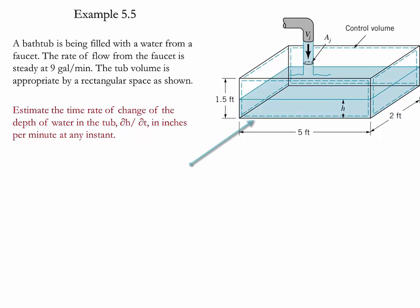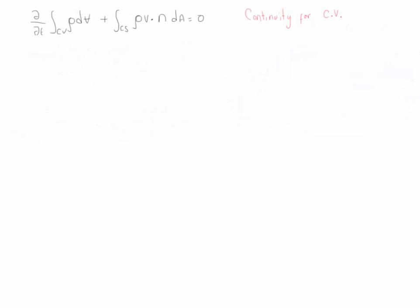We have a control volume provided by this boundary. We have one control surface which is the entrance, and we do not have a control surface for exit. At the control surface entering, we notice that the velocity is constant.